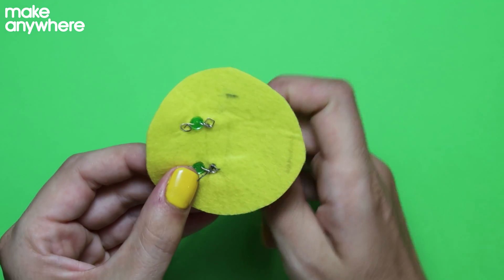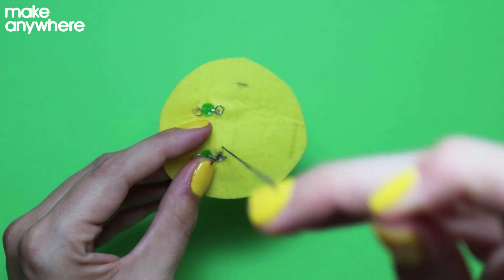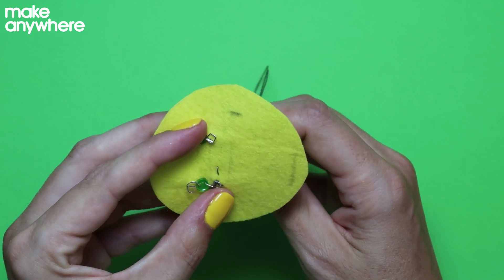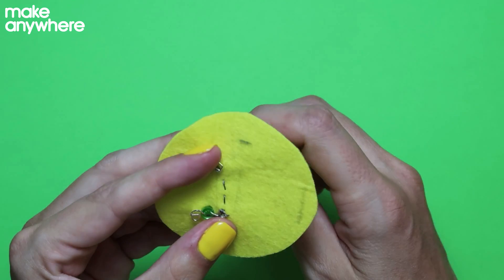Now do a small running stitch to join up the two negative legs. We want these stitches to be small and nice and tight, not too loose or baggy.